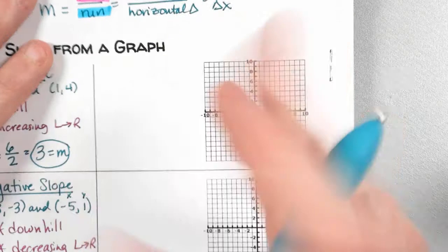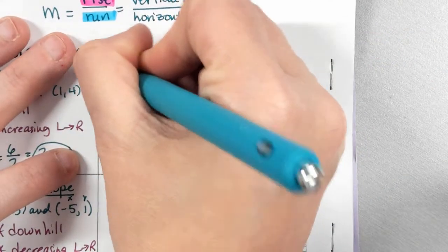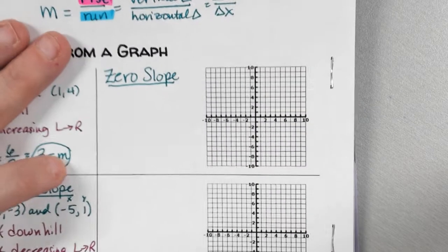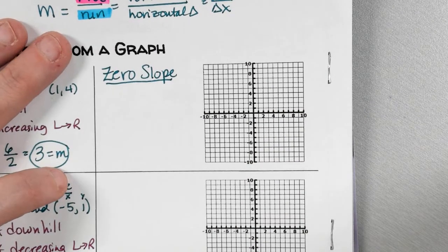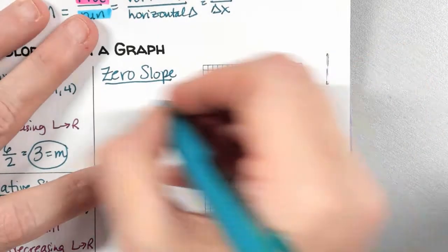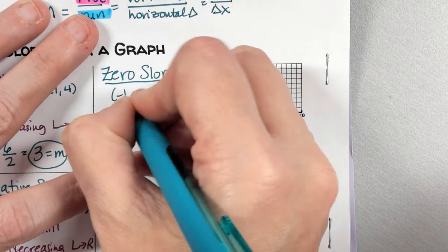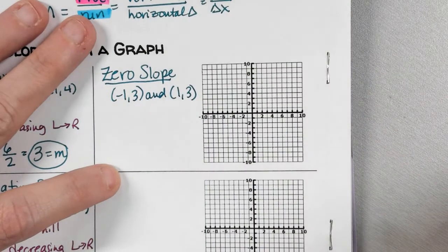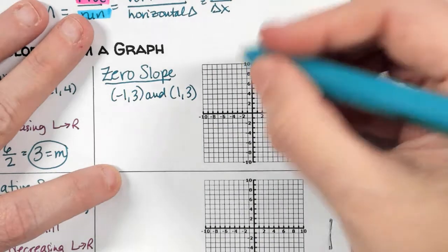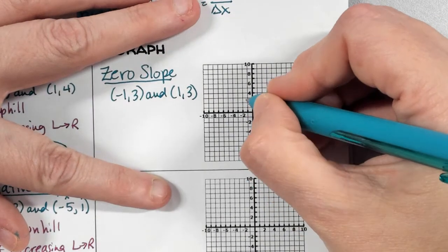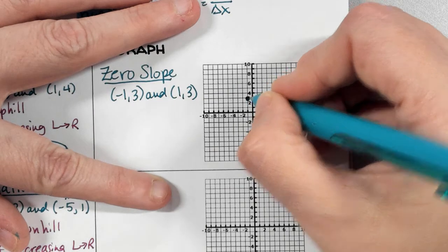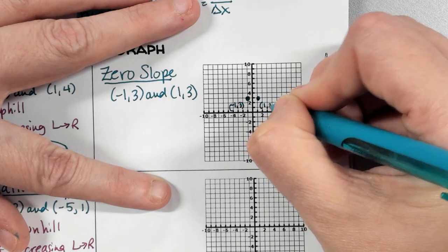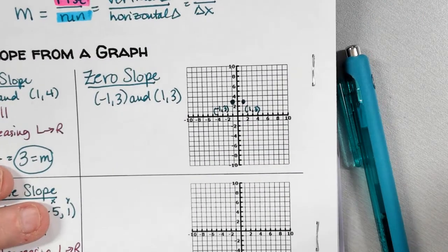We're going to do these pretty quickly because we'll spend a whole day on zero slope and undefined slope. Zero slope — the two points I want you to plot are negative one, three and one, three. Plot those two points and connect them with a line.